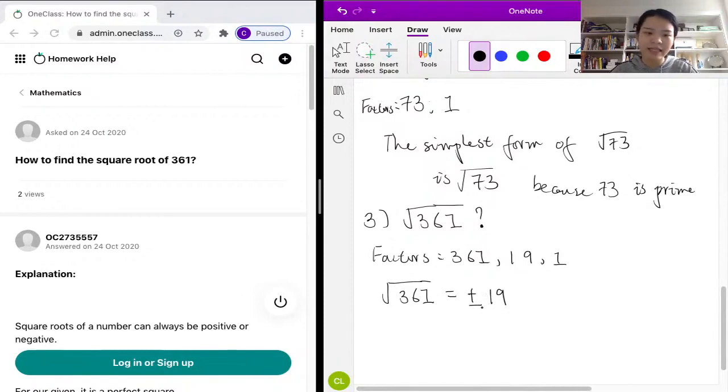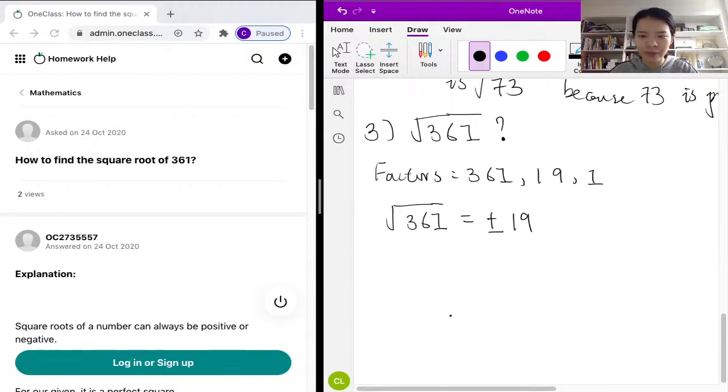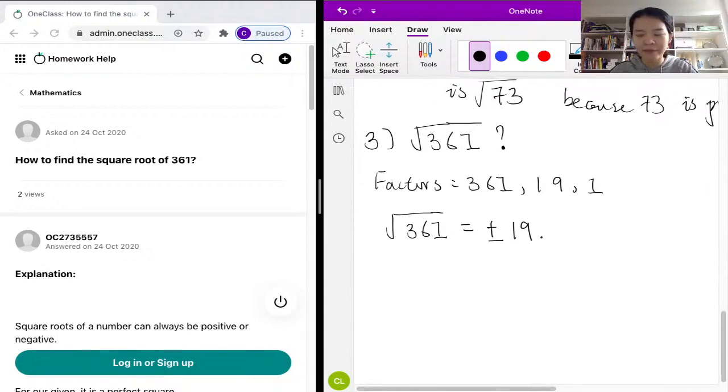You might want to ask how exactly do we know the square root of 361 is 19. The thing is, you can Google or it's probably on your formula sheet that it probably contains a list of perfect squares.